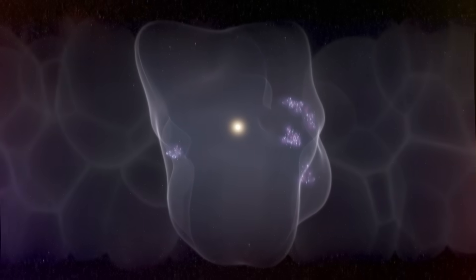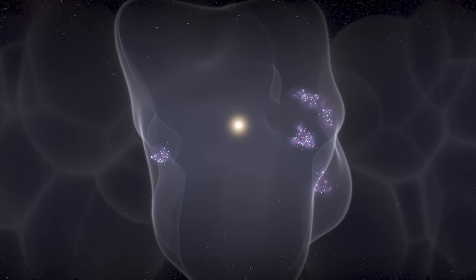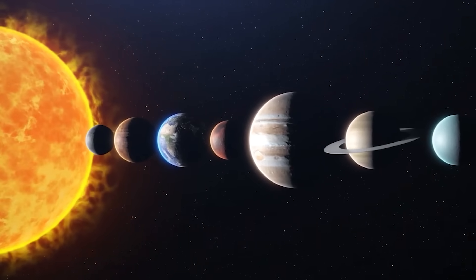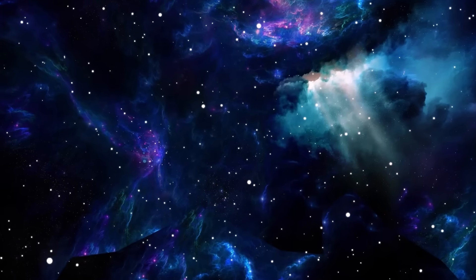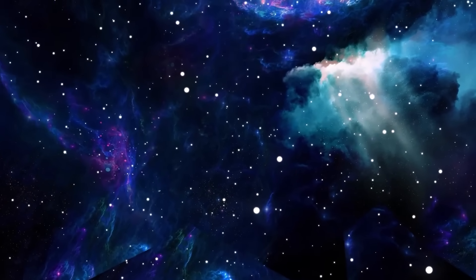Supernovae are known to trigger the birth of new stars by compressing nearby gas clouds, but they can also sterilize entire regions of space with their radiation. Polaris' explosion could be reshaping the very architecture of the local bubble, the cavity in the interstellar medium in which our solar system resides. The shockwave emanating from the event could eventually reach other star systems.